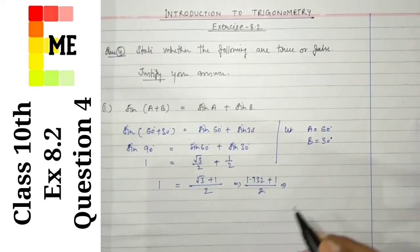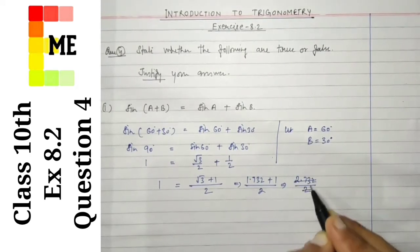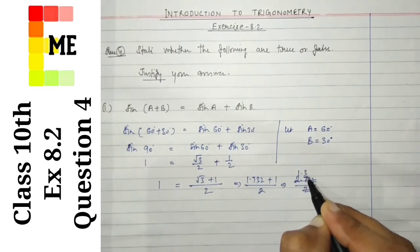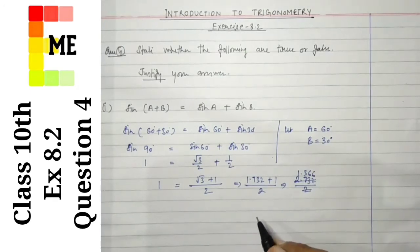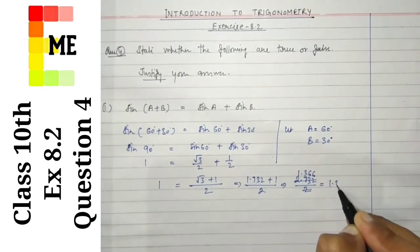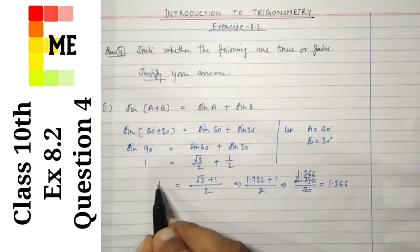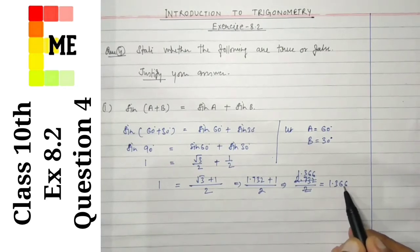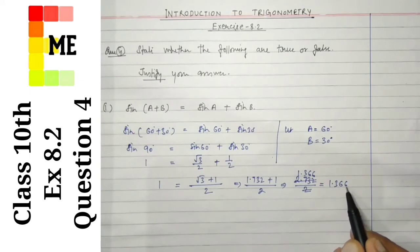That gives 2.732 divided by 2, which equals 1.366. So we have 1 on the left hand side and 1.366 on the right hand side. It clearly indicates that 1 is not equal to 1.366.